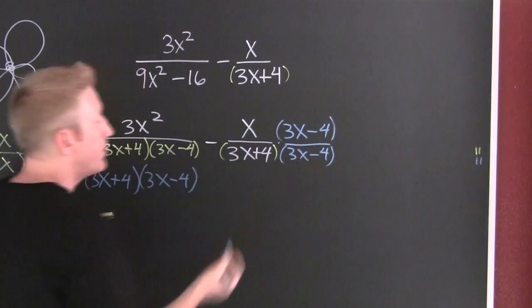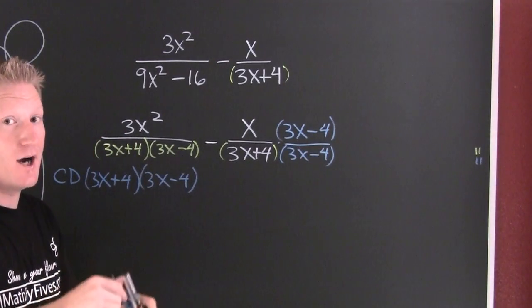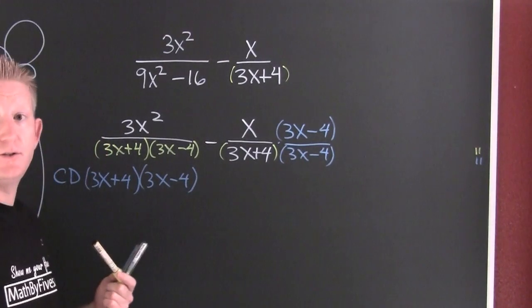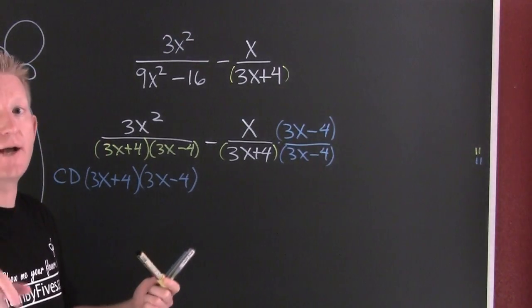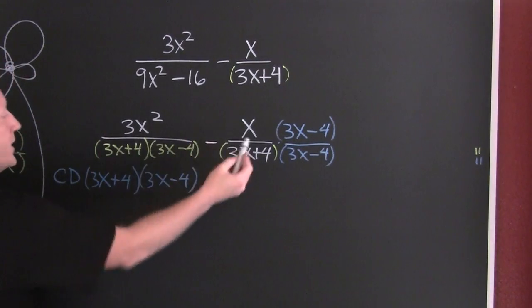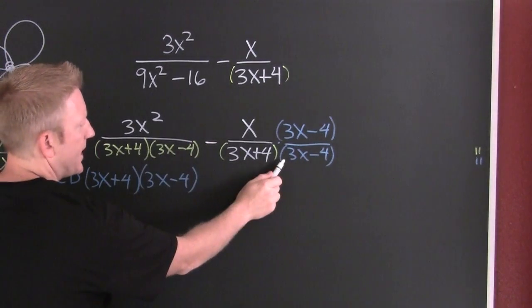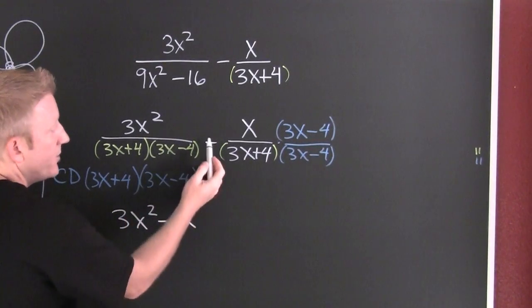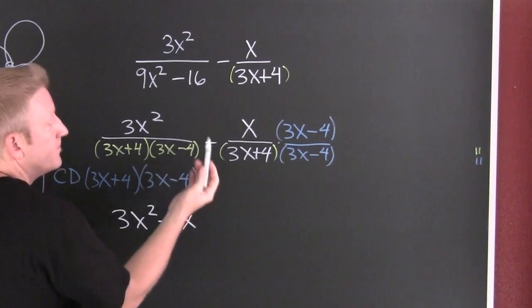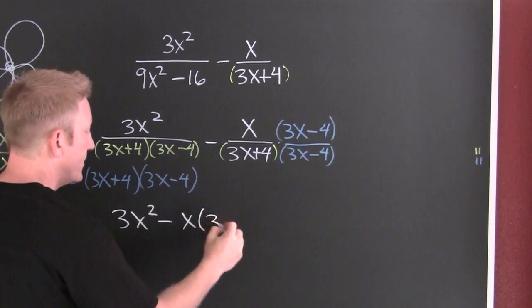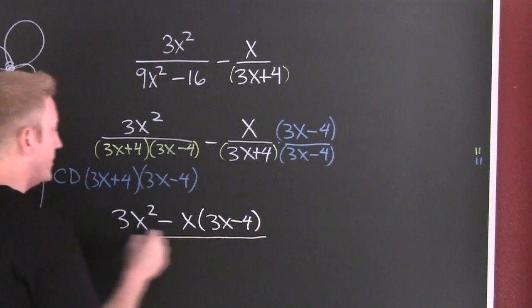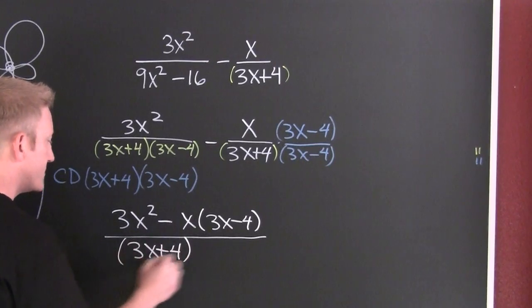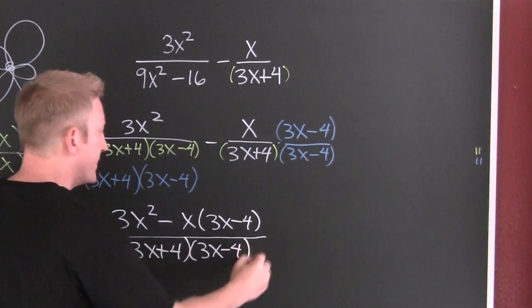Now you're really gonna be tempted to multiply that denominator out. But I caution you. You have a common denominator. So now what can you do? In this case subtract them. We can subtract their numerators. See how that denominator looks just like that one. So now I'm gonna have 3x squared minus x times 3x minus 4 all over 3x plus 4 times 3x minus 4.